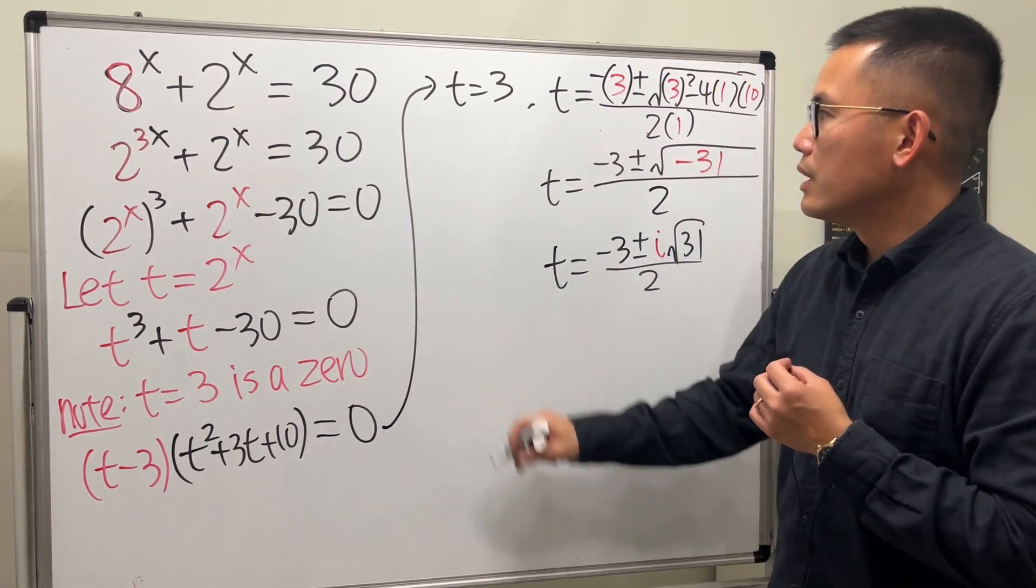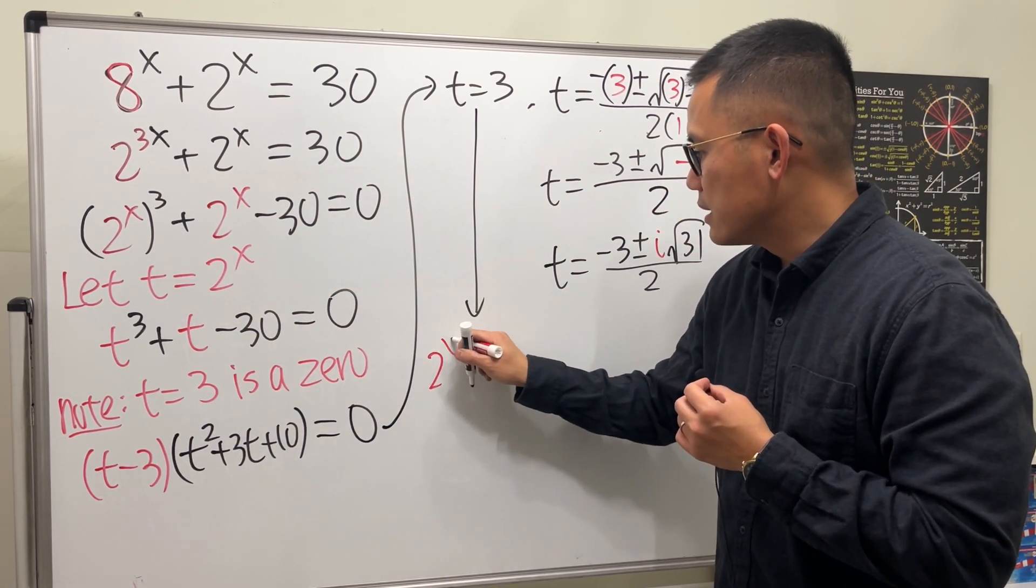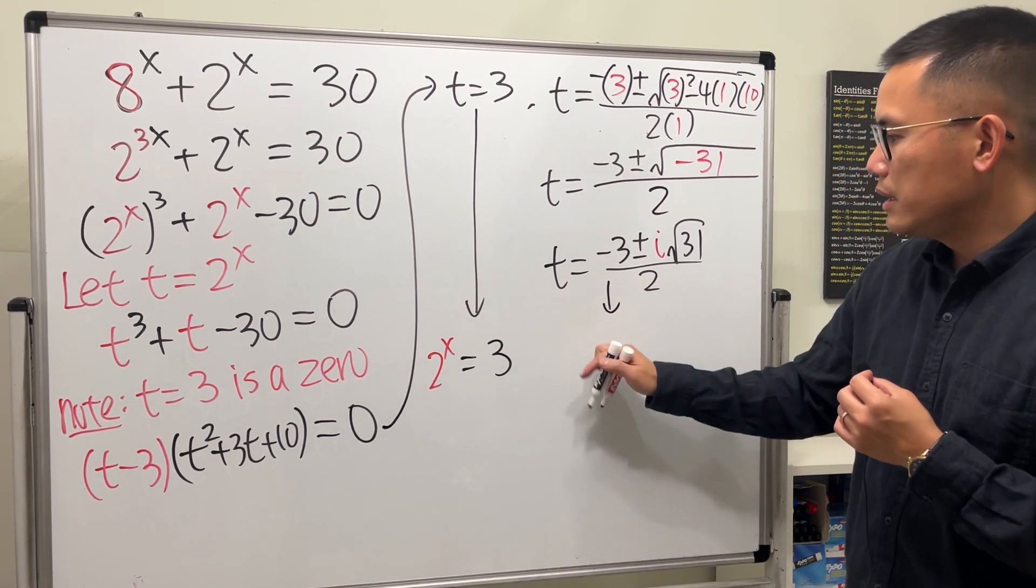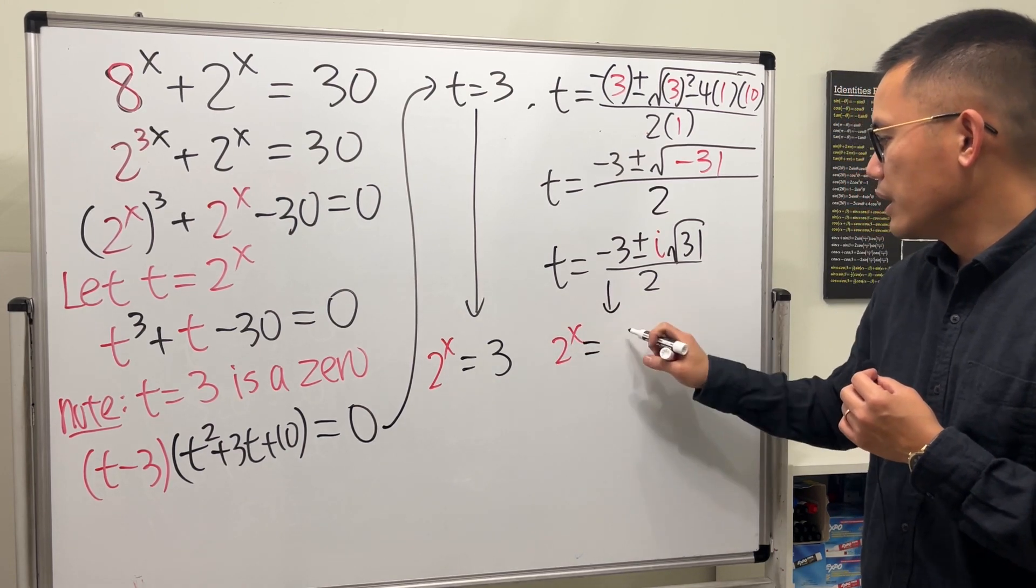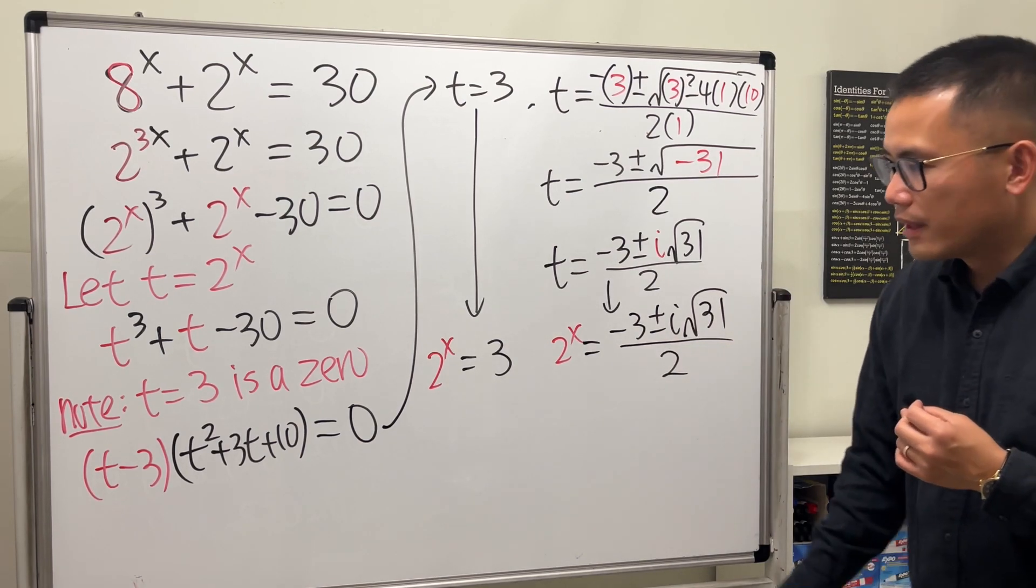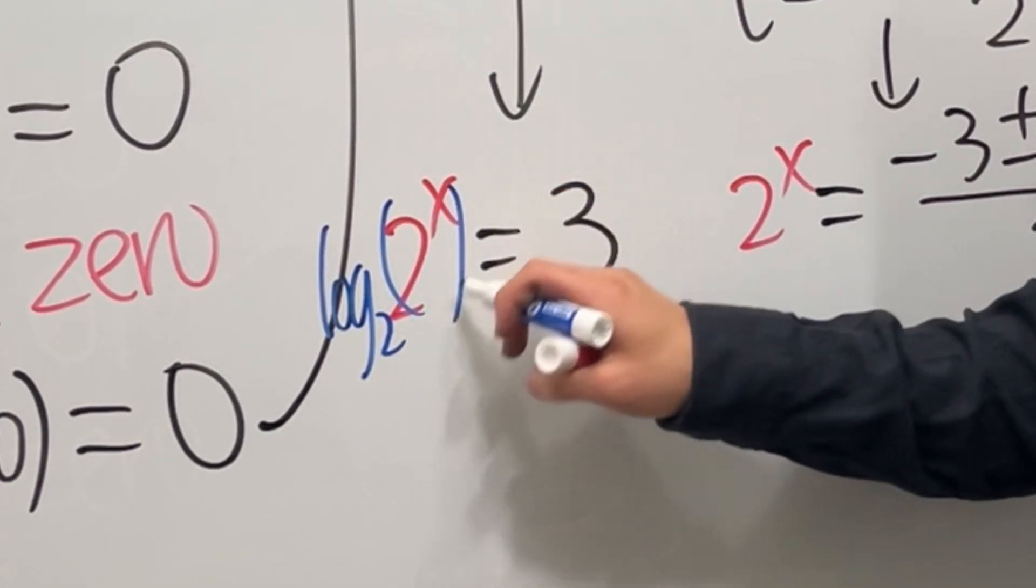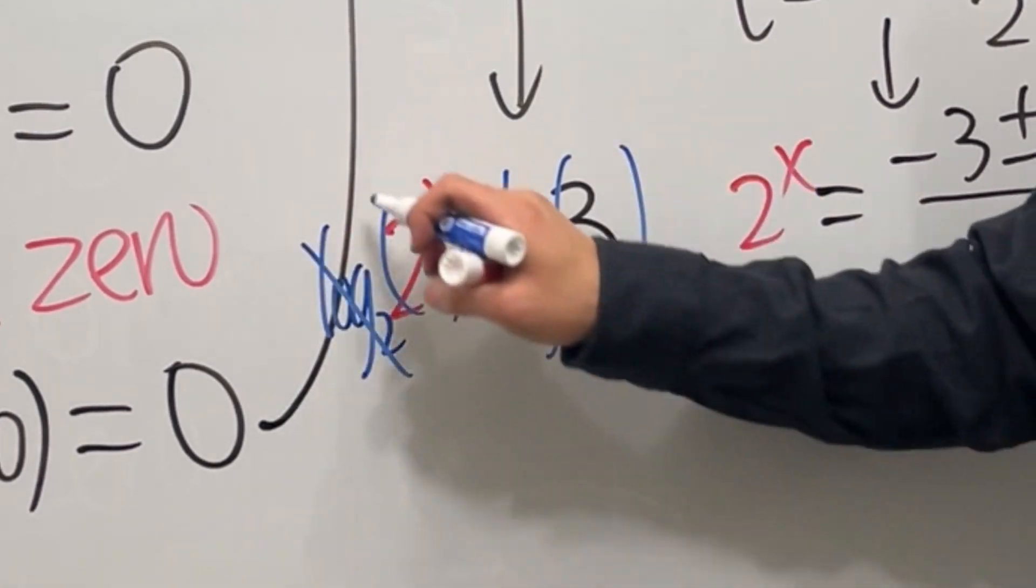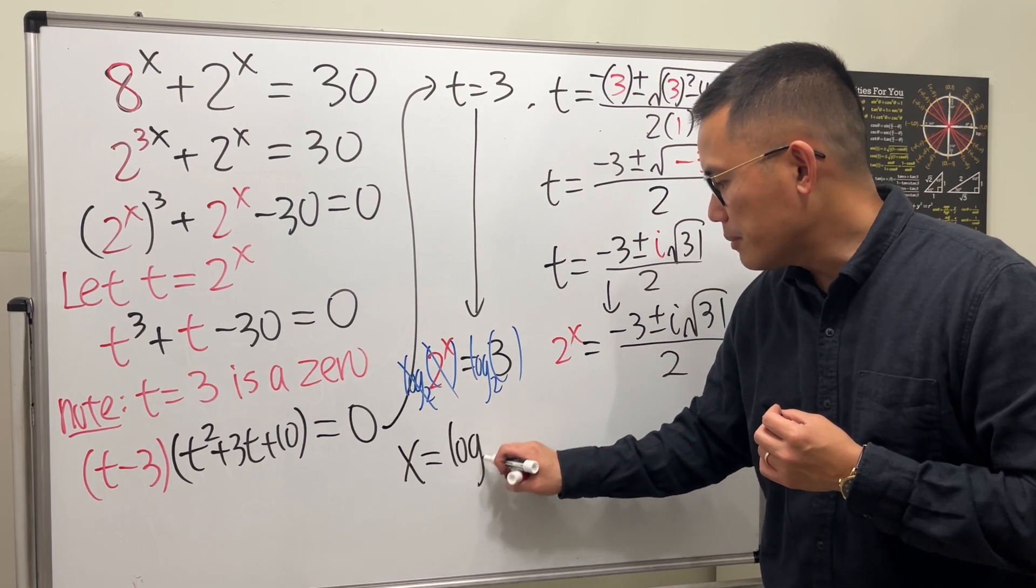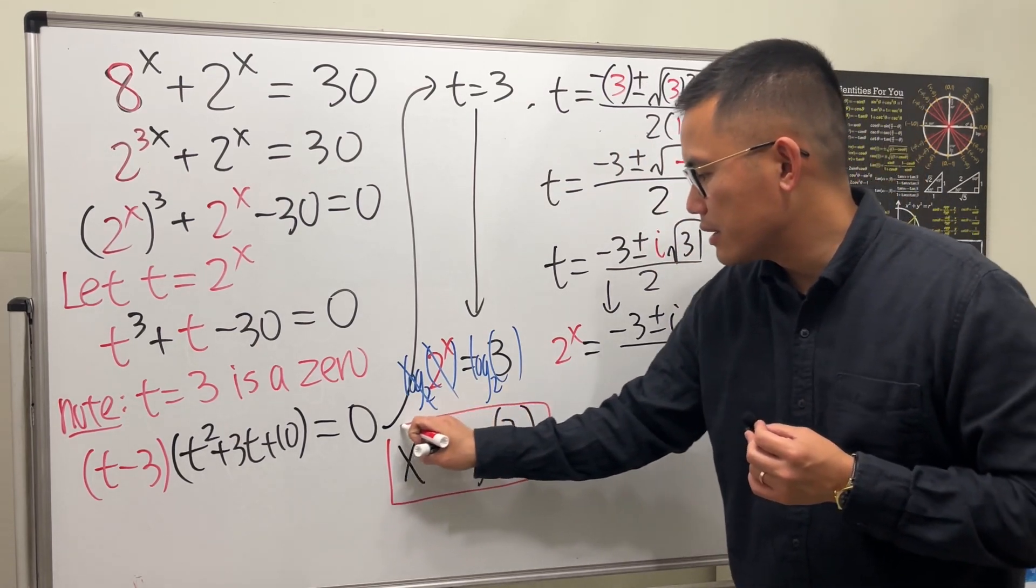So from here, remember t is equal to 2 to the x. So 2 to the x is equal to 3, right? And then similarly, right here, t is 2 to the x, which is equal to negative 3 plus or minus i square root of 31 over 2. Now, to get the x by itself, we can just take log with the same base 2 on both sides, so that this and that cancel, and this works out nicely. x is just equal to log base 2 of 3. And in fact, this is the only real solution.